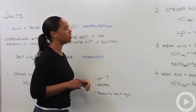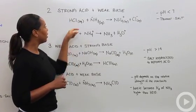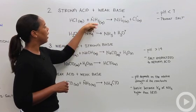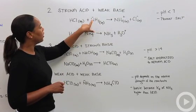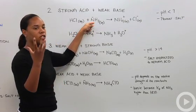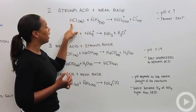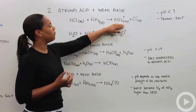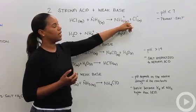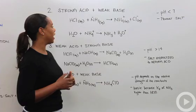The next scenario is a strong acid and a weak base. Using hydrochloric acid (HCl) as the strong acid and ammonia as the common weak base — the unpaired electrons on ammonia remind us it acts as a weak base, meaning it can remove the proton from HCl to form ammonium chloride (NH4Cl), written in its ionic species as NH4⁺ and Cl⁻.